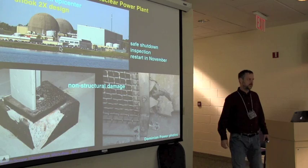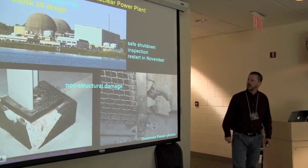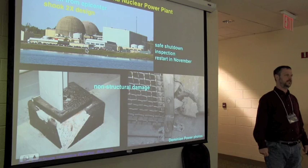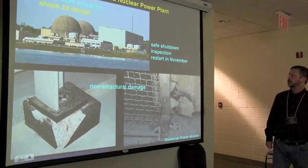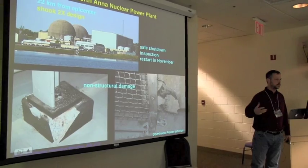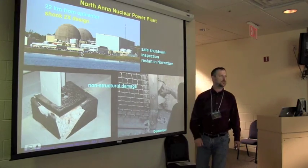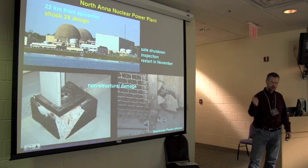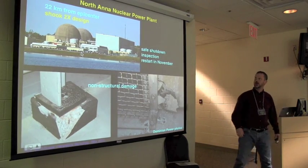Most interesting to us: the North Anna nuclear power plant, run by Dominion Power, is only 22 kilometers from the epicenter. The bad news is it shook at twice the level it was designed to withstand at several frequencies. The good news is it shut down very cleanly, absolutely according to protocol. There was no structural damage to the reactor — lots of non-structural damage — and the backup power worked properly. It was restarted in late November.